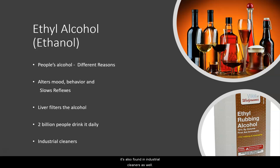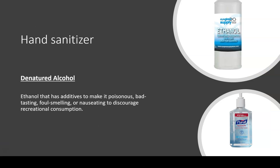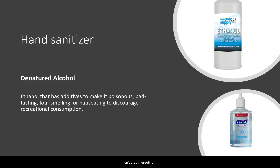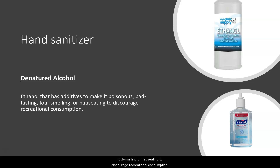Ethyl alcohol, although people drink it, is also found in industrial cleaners. Here's the kicker: ethyl alcohol is also found in hand sanitizer. The difference between what people drink and what's used for cleaning is that the ethanol has been denatured. Denatured means that the ethanol has additives to make it poisonous, bad tasting, foul smelling, or nauseating to discourage recreational consumption — basically a bunch of stuff in it so that you don't drink it. Denatured alcohol is also used for alcohol burners and camping stoves.